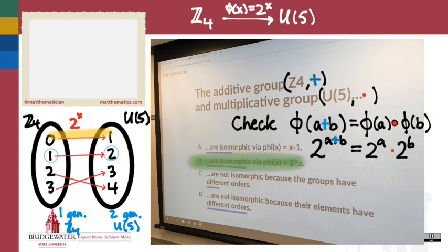To wrap up, showing two groups are isomorphic is kind of challenging—we generally have to come up with a function that satisfies those properties. Showing two groups are not isomorphic can be very quick. Just find a difference that matters: a difference in the orders of the groups, a difference in the fundamental properties of the groups, or the orders of their elements. As soon as we find one disagreement, those two groups cannot be isomorphic.